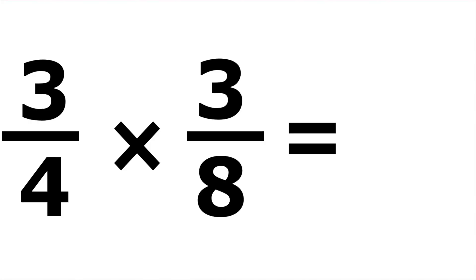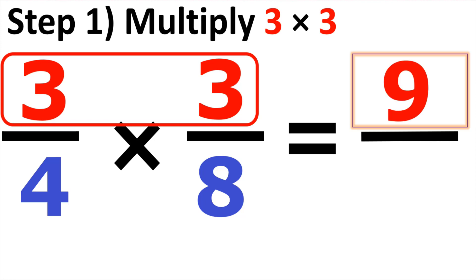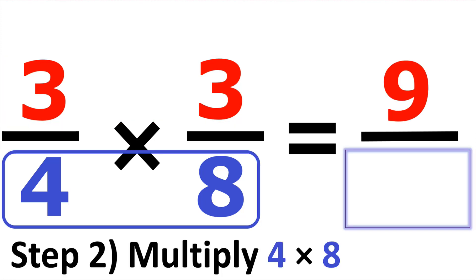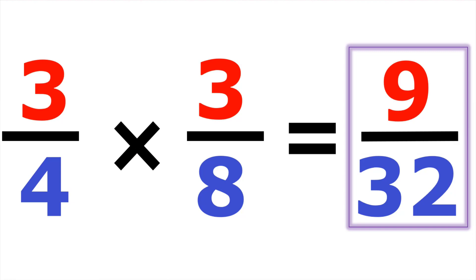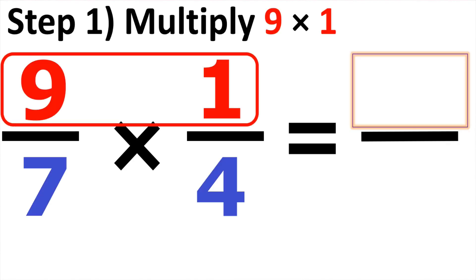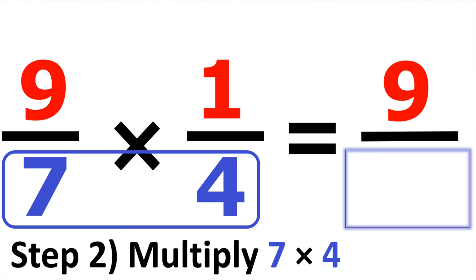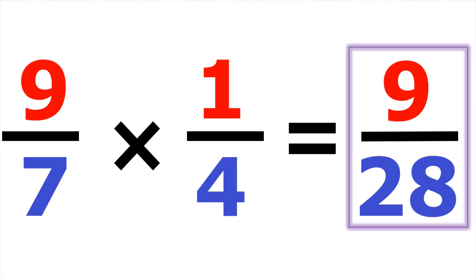Example number ten: three over four times three over eight. Three times three is equal to nine. Looking at the denominators, four times eight is equal to thirty-two, so the answer is nine over thirty-two. For number eleven, we have nine over seven times one over four. Nine times one gives us nine, and seven times four gives us twenty-eight. So the answer is nine over twenty-eight.